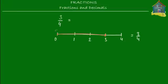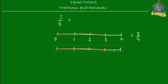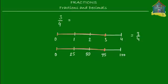Now what I do next is I take the same number line and copy it here, and instead of running from 0 to 4, this time I have it run from 0 to 100. If 0 to 100 is divided into 4 parts, then each part is 25, because 100 divided by 4 is 25. So the marks are at 25, then 50, then 75, and then 100.